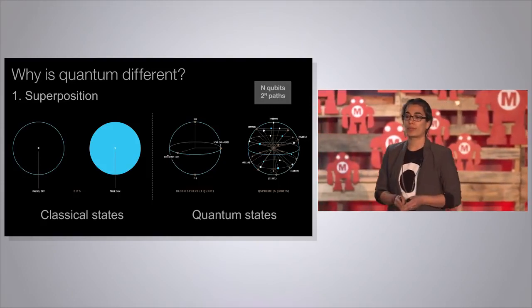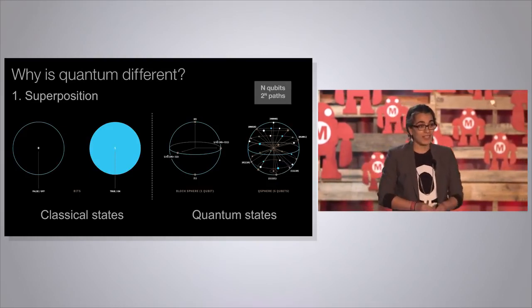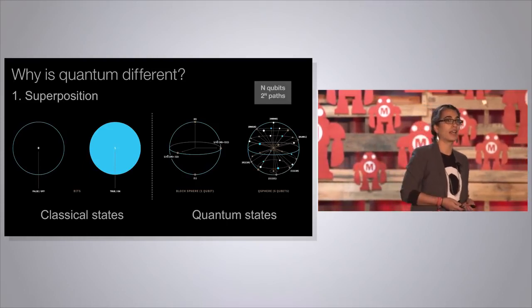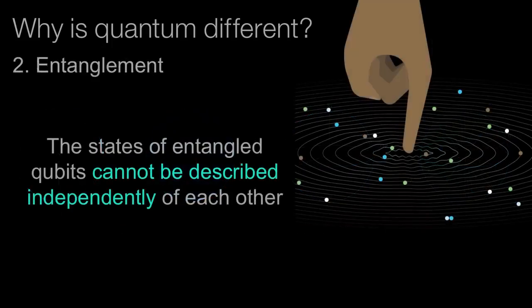If one qubit can be in a superposition of two states, then two qubits can be in a superposition of four states, and three qubits can be in a superposition of eight states. The possibility space you can explore is much more interesting and complex in quantum information. The diagram on the right is showing you a superposition of five qubits — you can be in a superposition of 32 states. Superposition is the first thing. The second thing is entanglement. I've got two qubits and I'm entangling them together, so measuring the first qubit can tell me something about what will happen when I measure the second qubit. Entanglement is the second property that gives quantum information a really unique difference.